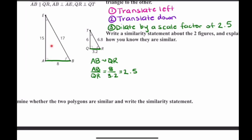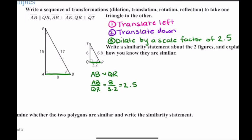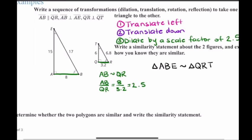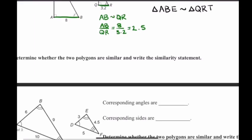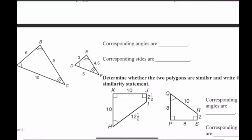That means if I dilate triangle QRT by a scale factor of 2.5 — after translating it left and down — I will map triangle QRT onto ABE. So I can say that triangle ABE is similar to triangle QRT. These are sequences of transformations that map your two triangles onto each other.